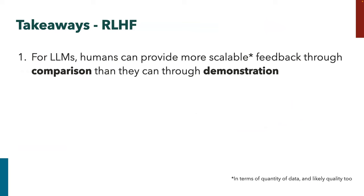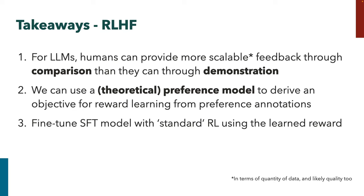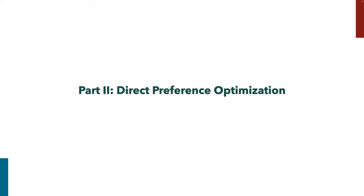Wrapping up the RLHF section: humans can provide more scalable feedback with comparisons than through demonstrations. This is a special case of a more general question about scalable oversight of powerful models. It's scalable both for collecting data and for quality — it's probably easier to exceed human performance using comparisons than demonstrations. We use a theoretical preference/choice model to drive the reward learning objective, and once we do that we fine-tune with off-the-shelf RL using the learned reward and get a great model.